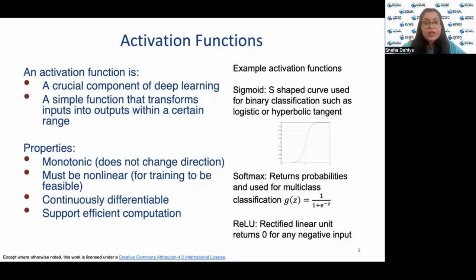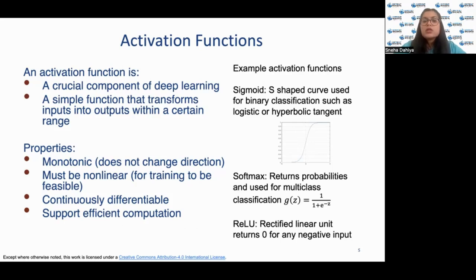The sigmoid activation function, for example, is an S-shaped curve used for binary classification, such as logistic regression or hyperbolic tangent. The softmax activation function returns probabilities and is used for multi-class classification.